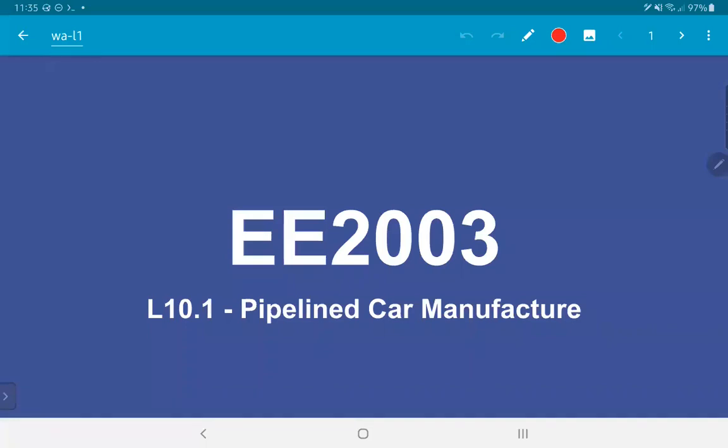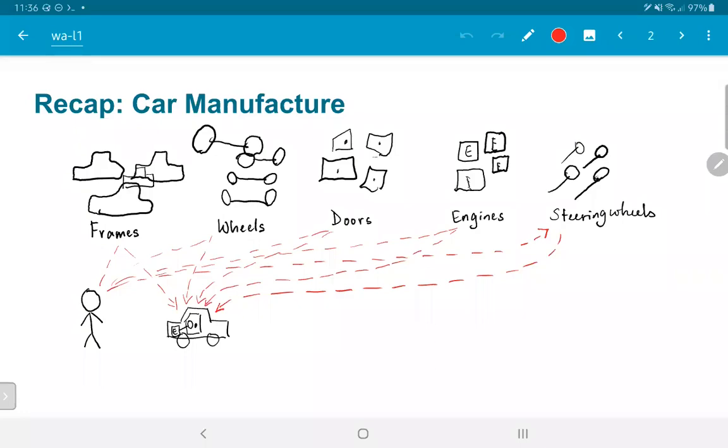In this video, we are going to take the analogy of car manufacturing to understand the idea of pipelining a little further. A quick recap of the process that we envisioned for manufacturing cars: we have containers that have frames, wheels, doors, engines, and steering wheels. The technician who needs to assemble the car needs to select one of each of these and put them together.